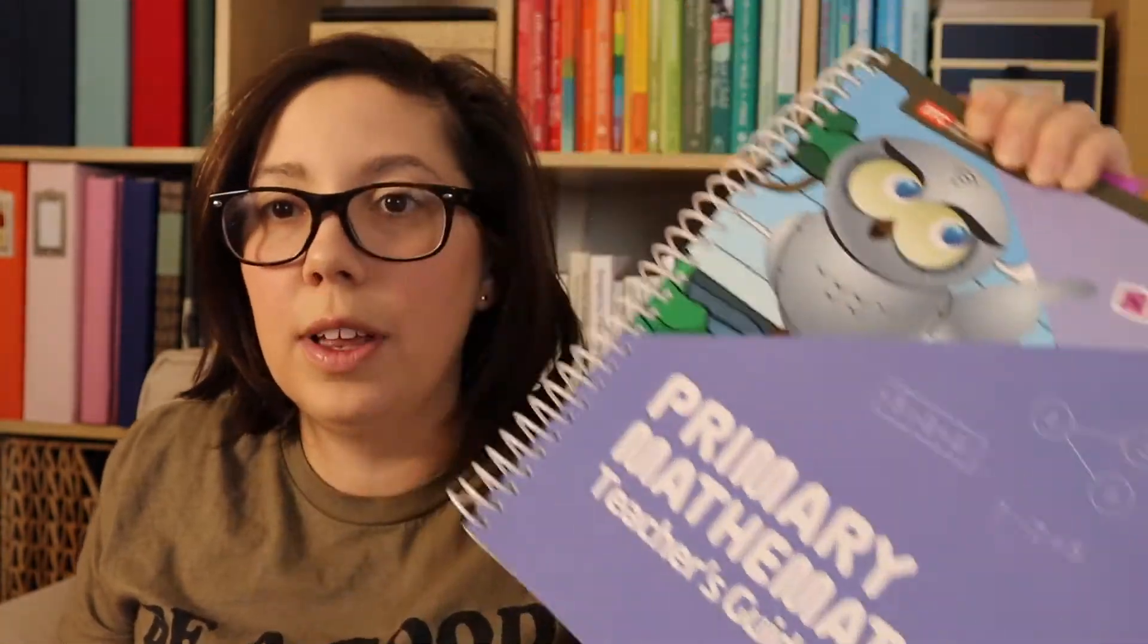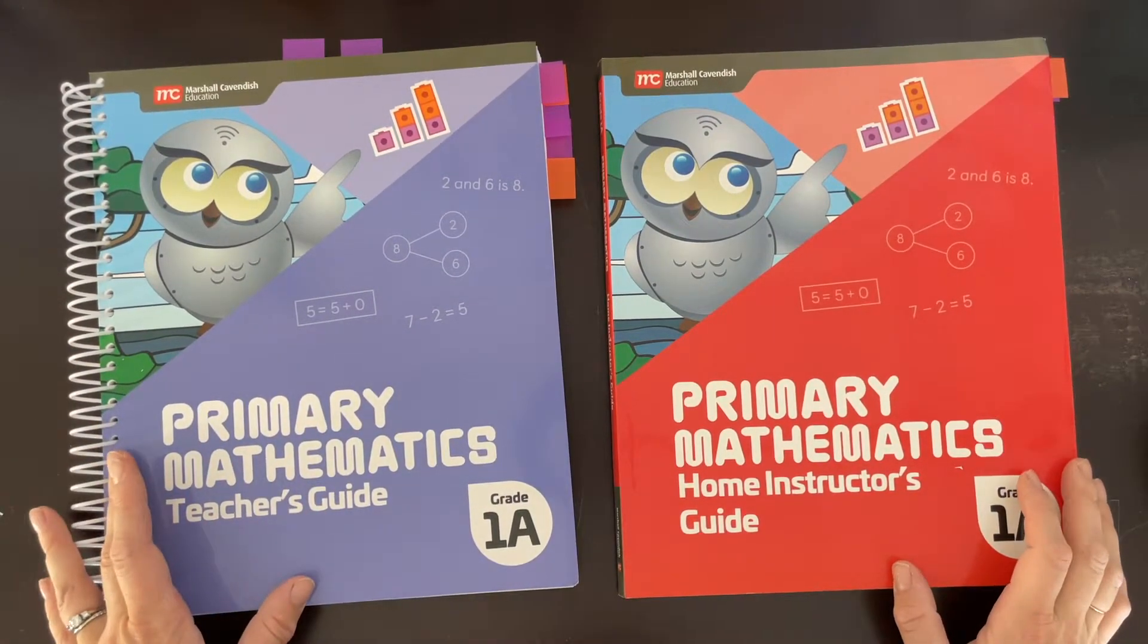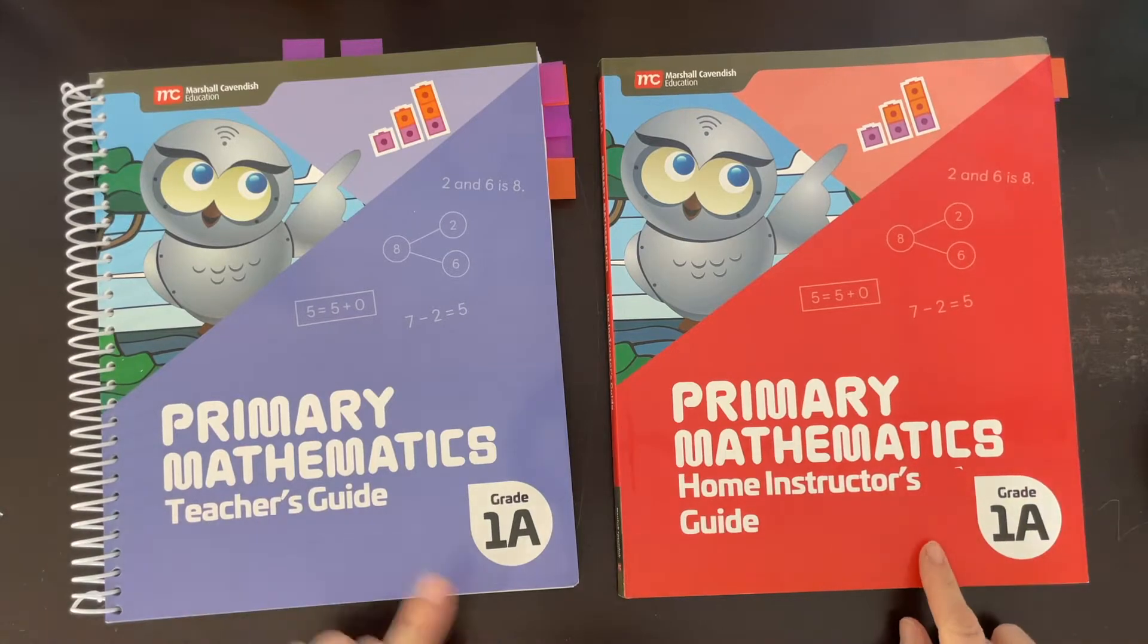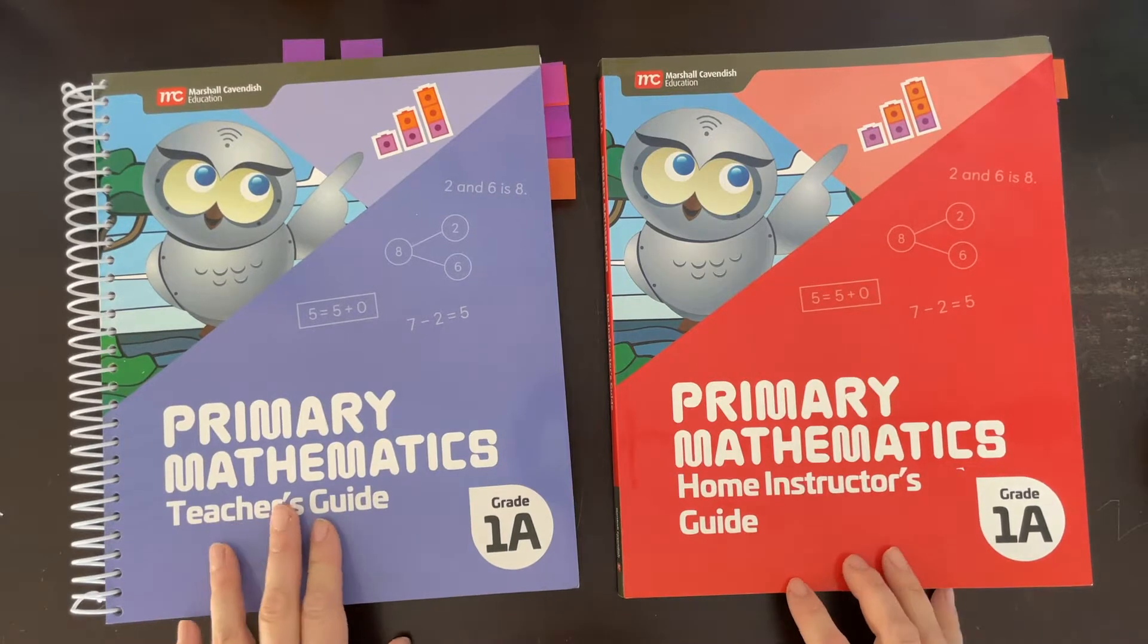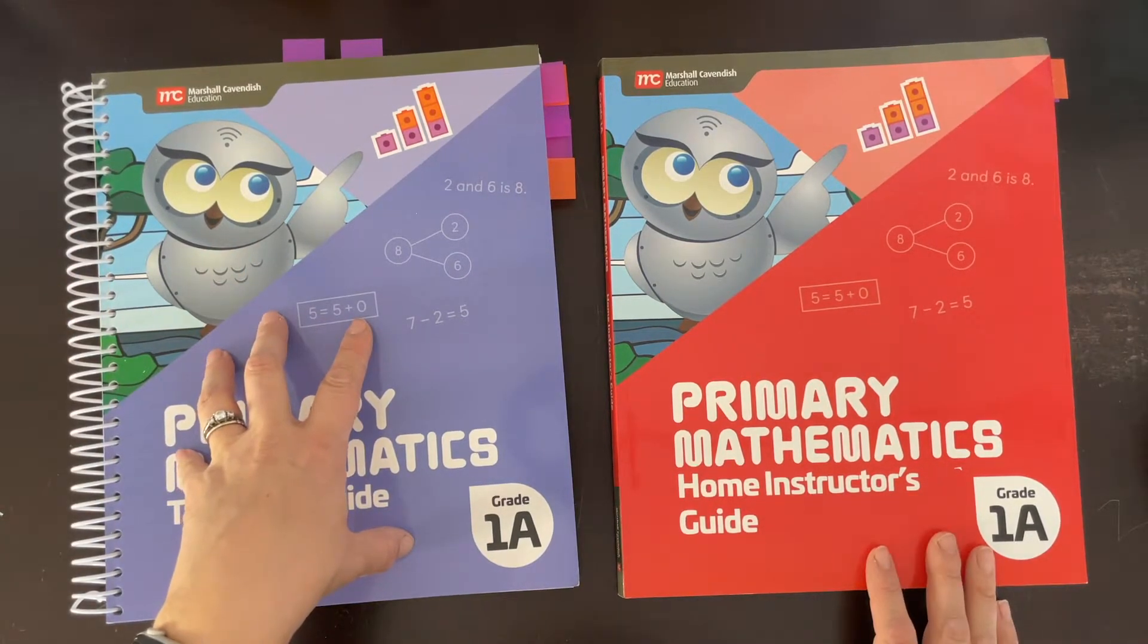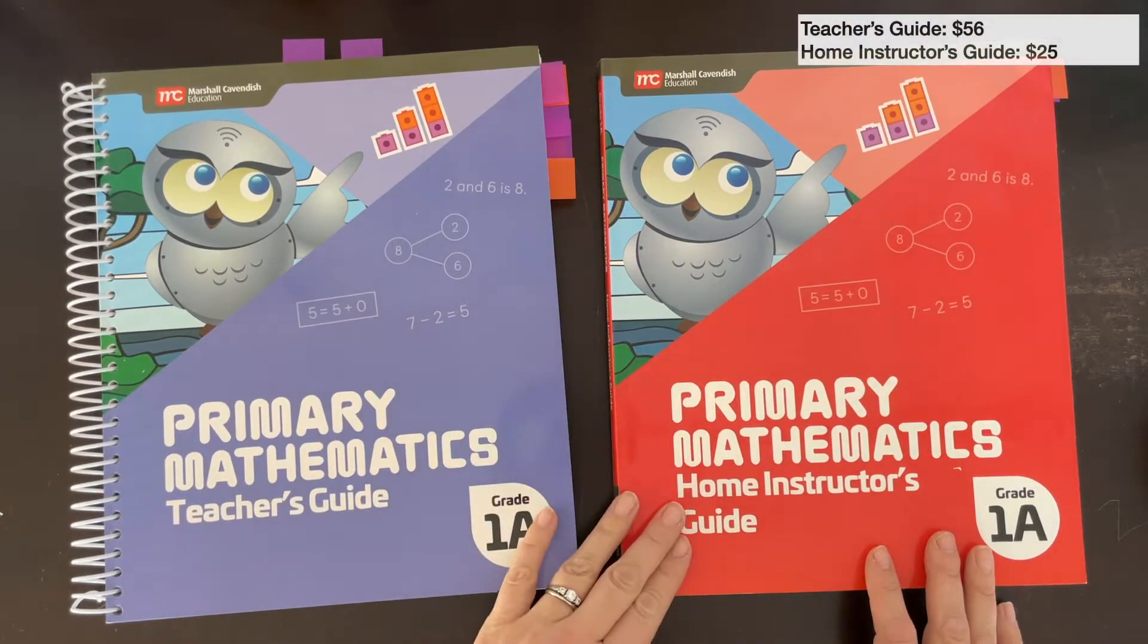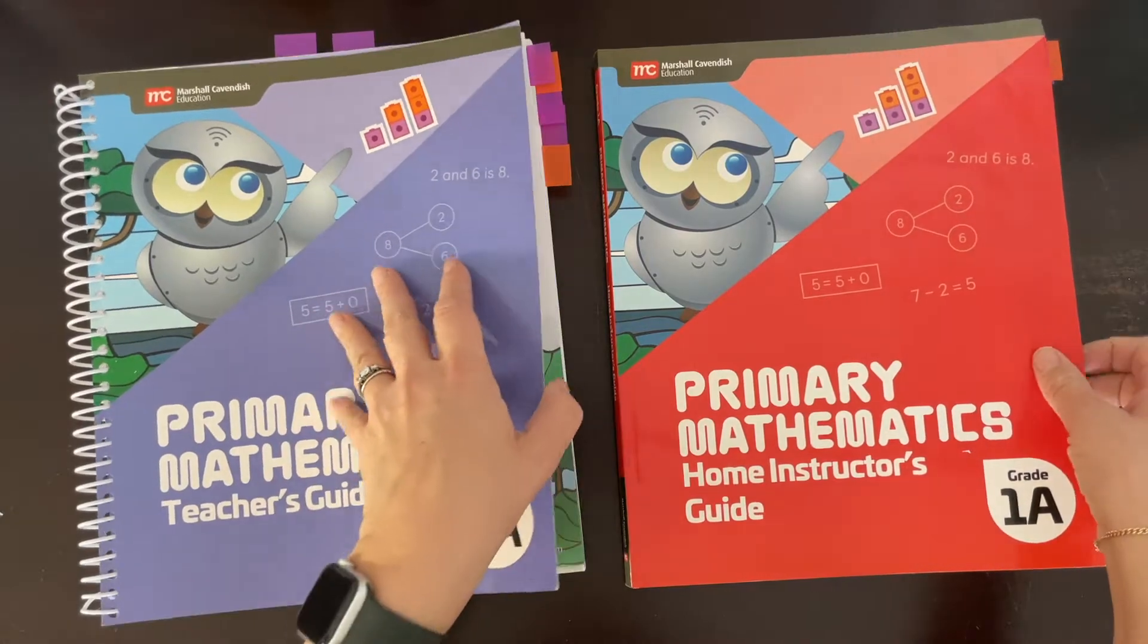In this video, I'm going to be comparing the new Primary 2022 Mathematics teacher's guides and home instructor's guides for level 1A. There is a pretty significant price difference between the two—the teacher's guide is around $50 and the home instructor's guide is around $20. There are some pretty substantial differences in my opinion.